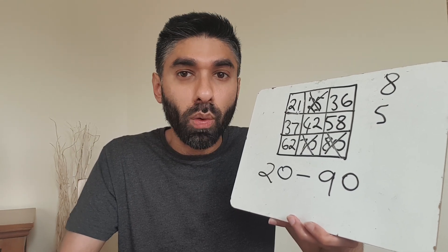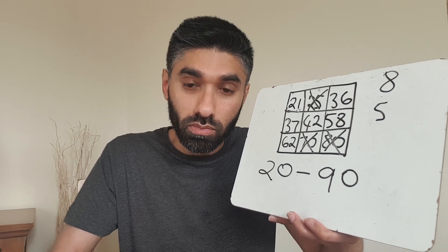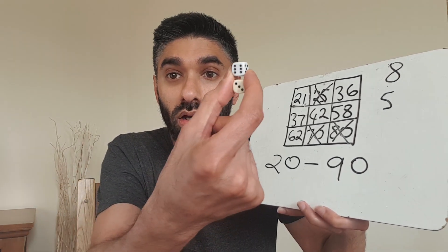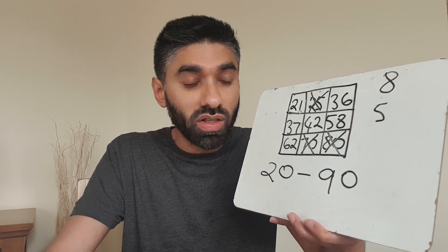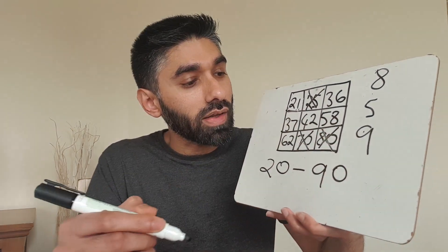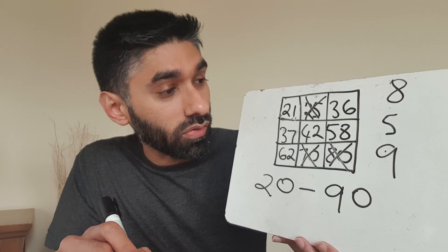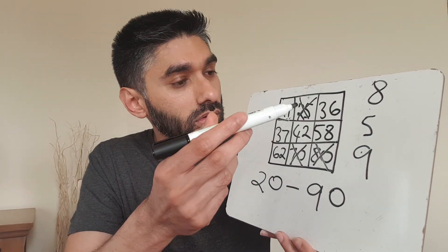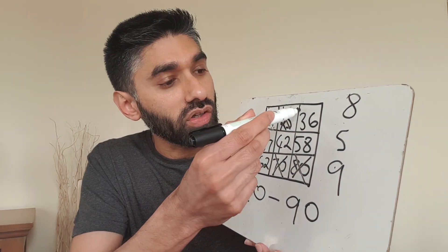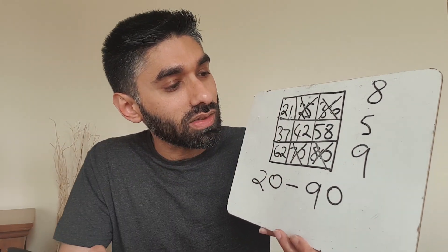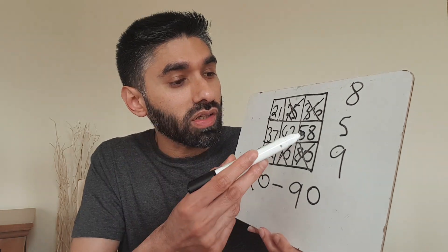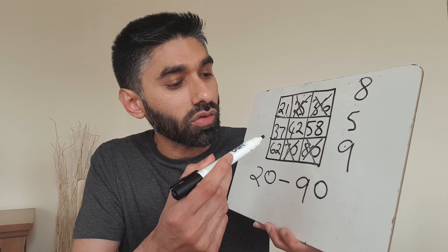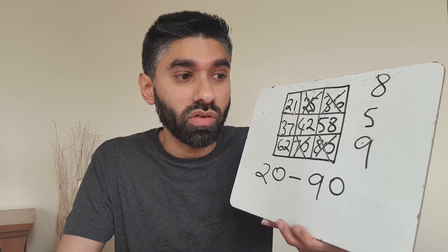Next roll: six and three is nine. Do I have any multiples of nine on this grid? Nine times four is 36 - let's cross out 36. So far I've crossed out four numbers in three rolls - not bad!